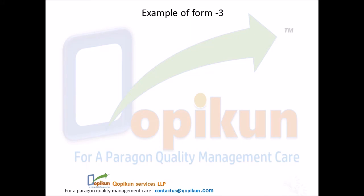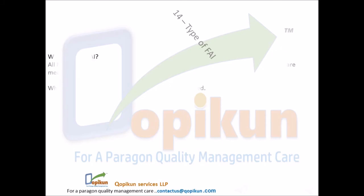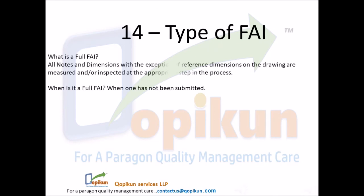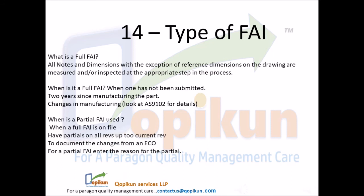Types of FAI. What is a full FAI? All notes and dimensions, with the exception of reference dimensions on the drawing, are measured and/or inspected at the appropriate step in the process. When is a full FAI required? When one has not been submitted; two years since manufacturing the part; or changes in manufacturing — see AS9102 for details. When is a partial FAI used? When a full FAI is on file, and you have partials on all revisions up to the current revision, to document changes from an ECO. For a partial FAI, enter the reason for the partial.